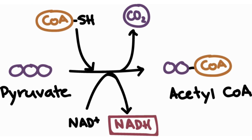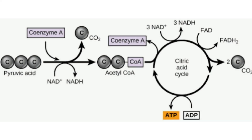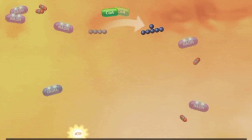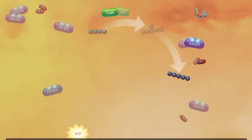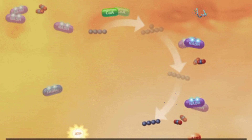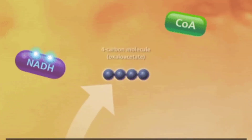Coming to the next step of respiration, known as pyruvate oxidation or the link reaction. Overall, pyruvate oxidation converts pyruvate into acetyl-CoA, which is a 2-carbon molecule attached to coenzyme A, producing an NADH molecule and releasing one carbon dioxide molecule, because pyruvate is a 3-carbon molecule. This acetyl-CoA then acts as fuel for the citric acid cycle. You can see that 3 NAD molecules are converted into 3 NADH molecules per cycle. Since 2 molecules of acetyl-CoA are used, 2 cycles operate simultaneously, giving a total of 6 NADH produced.